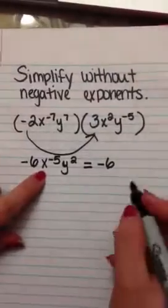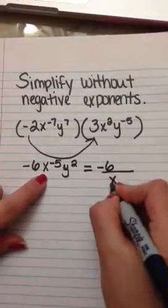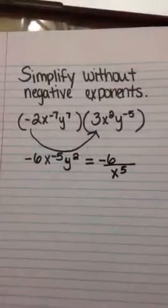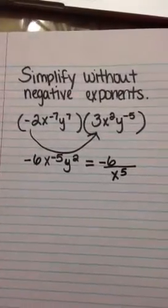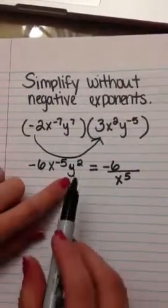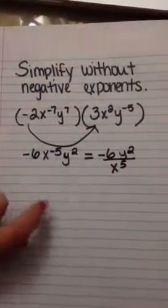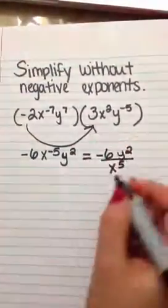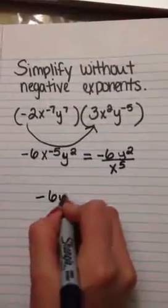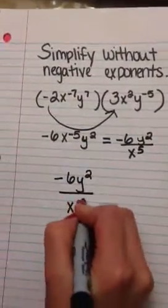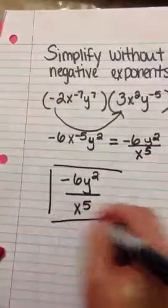So x to the -5th will go down in the denominator and it will make it a positive 5, because we cancelled out the negative. Y squared will stay on top because it does not have a negative exponent. And that is your answer: -6y squared over x to the 5th.